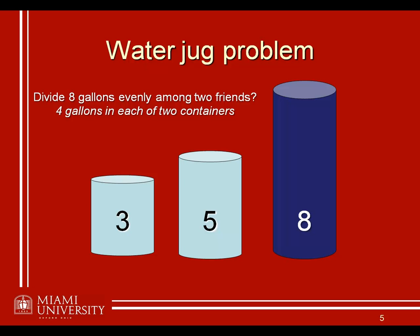Now imagine you're in a situation where you present people with a problem like this one, and then you want to see how well they do on some other problem. Maybe you introduce an experimental manipulation that you think is going to increase people's problem-solving ability — something like the presence of caffeine or some other drug, or a special concentration or breathing technique, or even something as direct as an instructional manipulation that teaches the underlying mathematics.